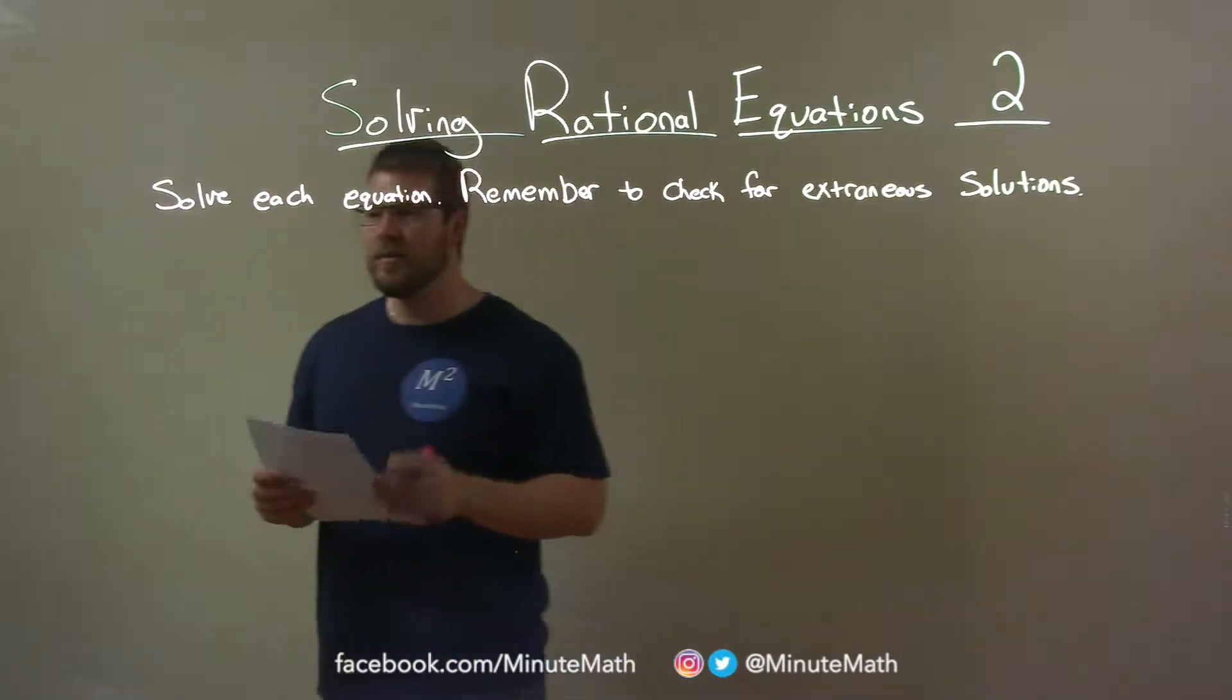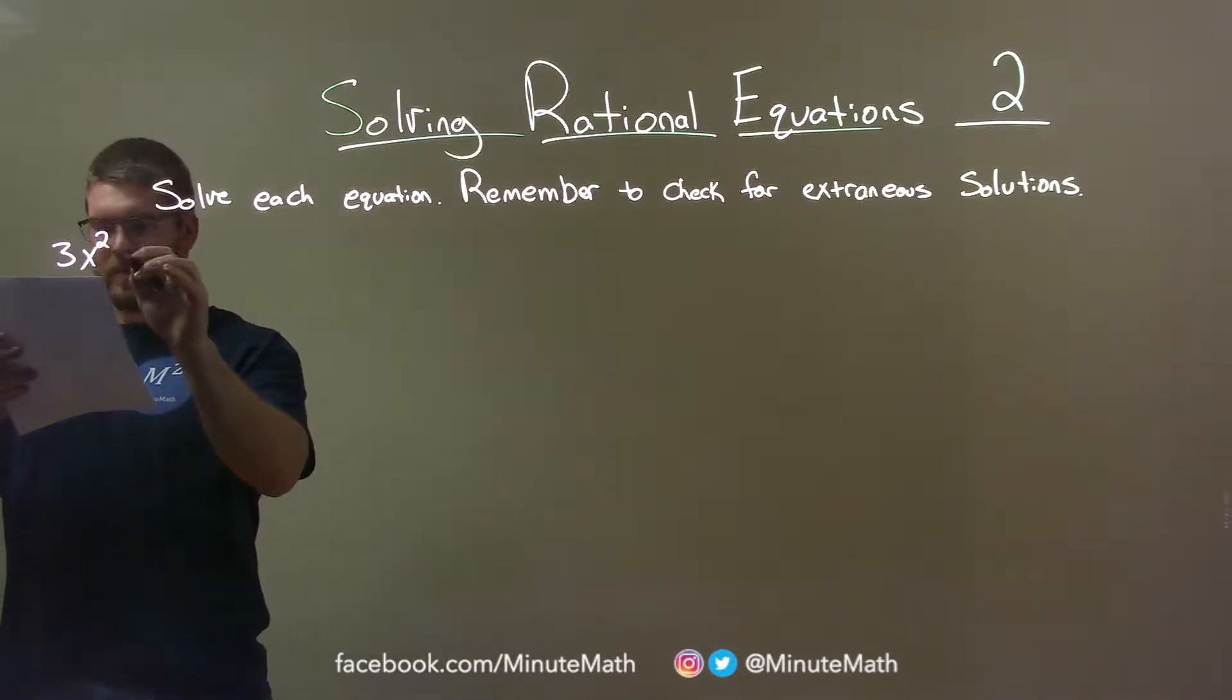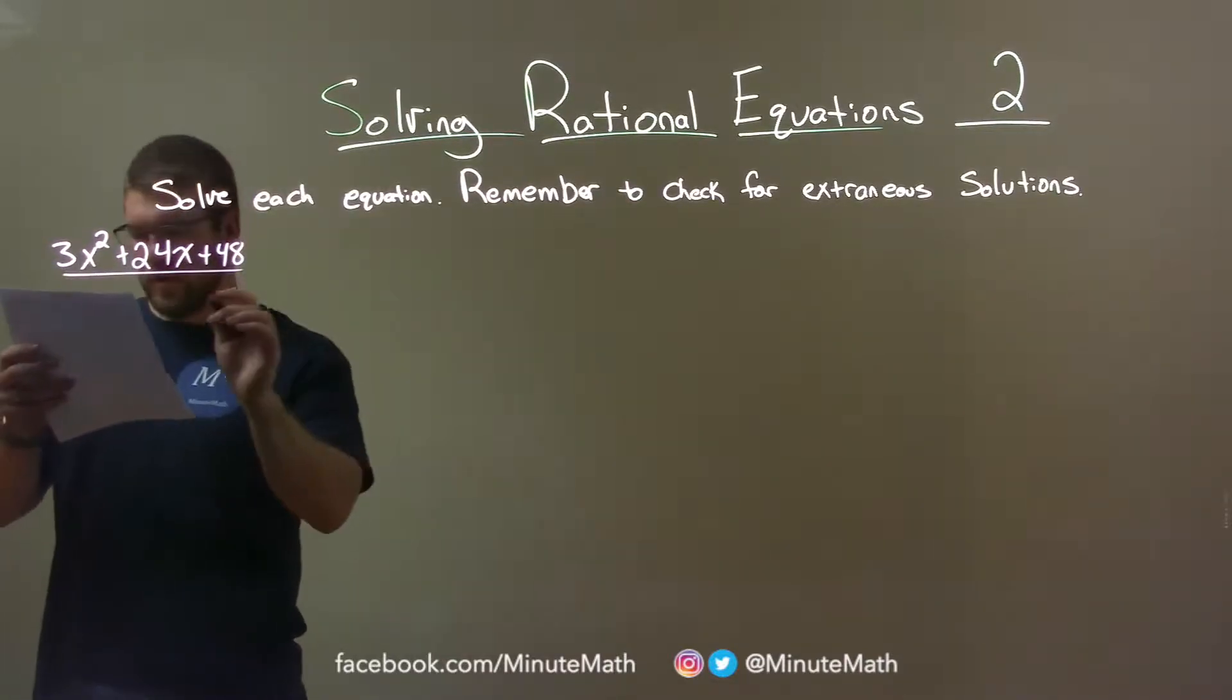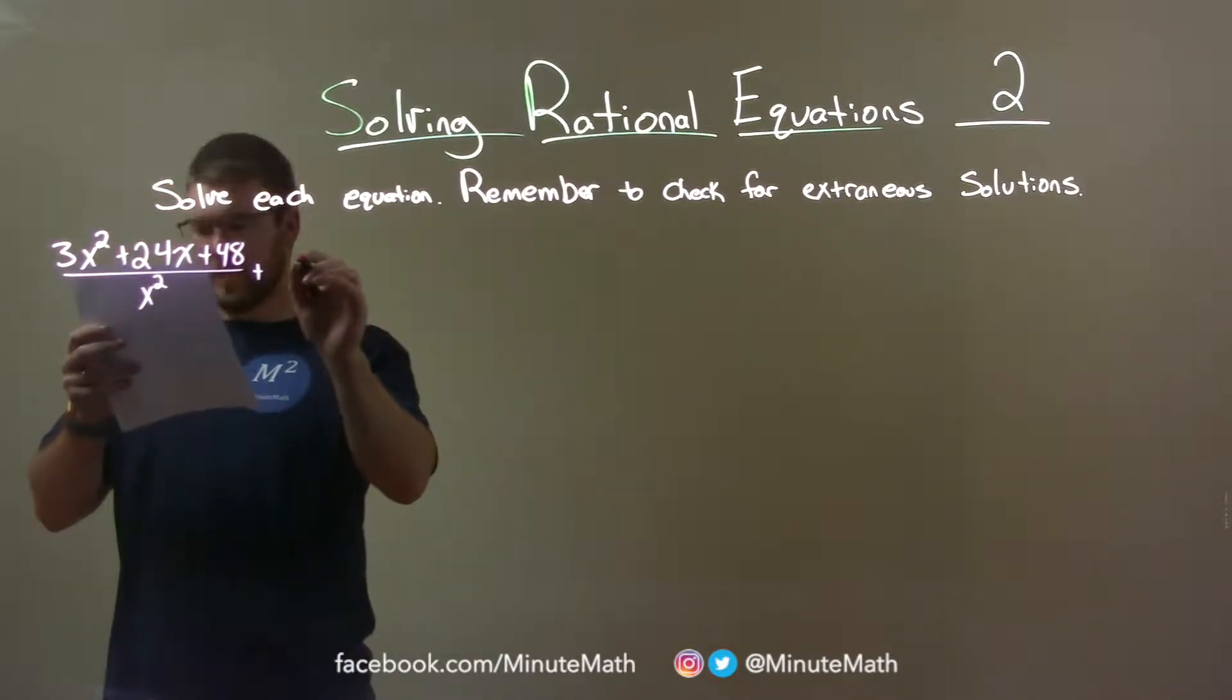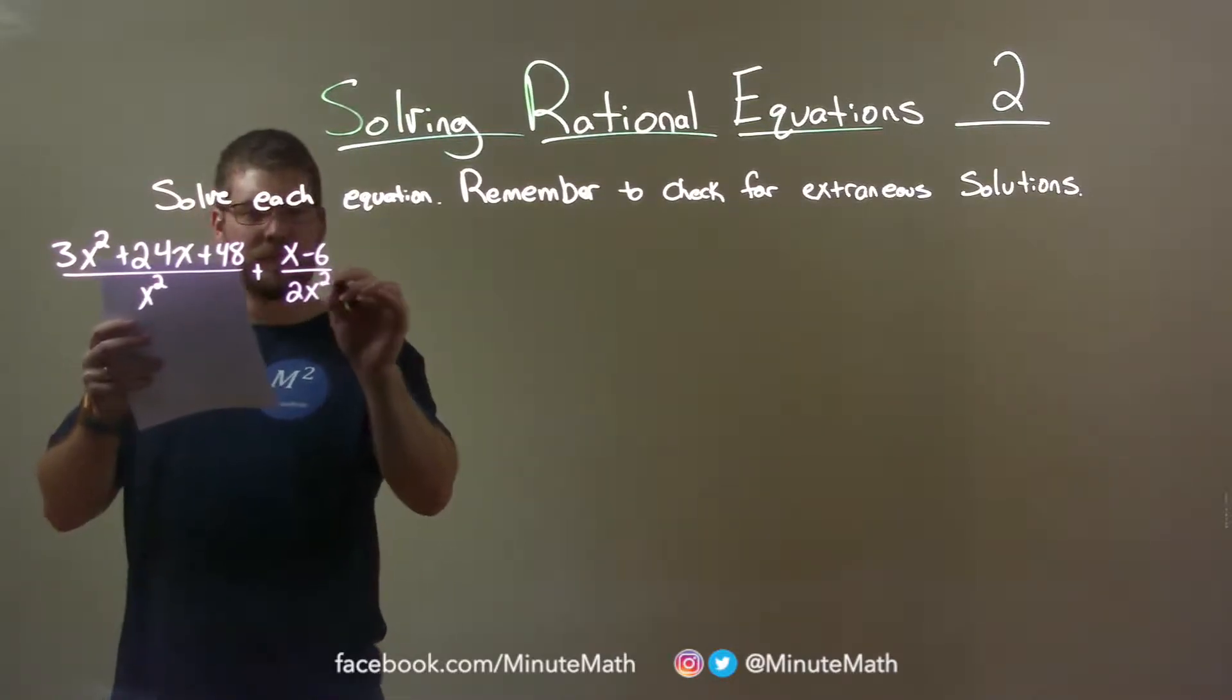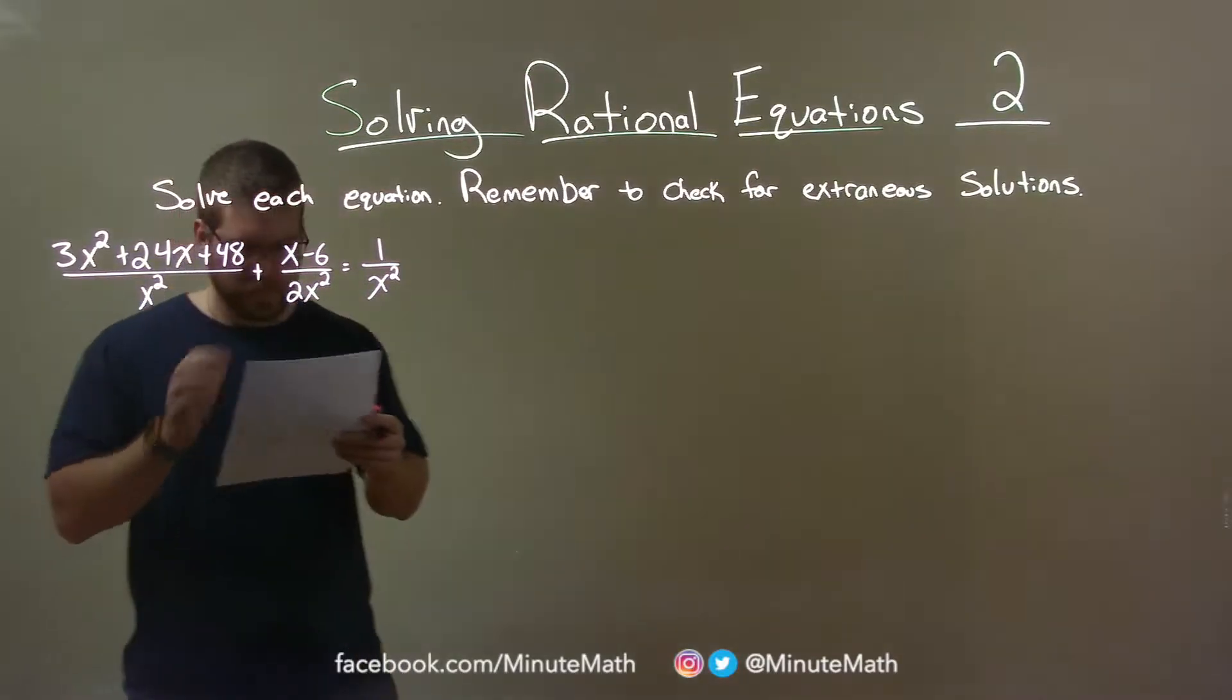If I was given this problem: 3x squared plus 24x plus 48 over x squared, plus x minus 6 over 2x squared, and that's equal to 1 over x squared.